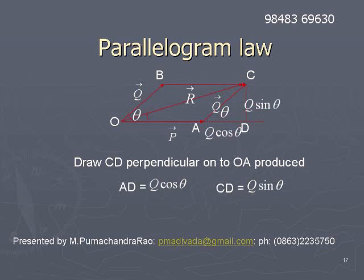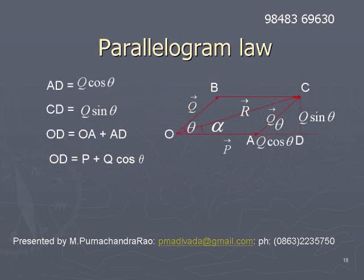The magnitude of q-bar is q. So the component AD will be q·cos(theta) and the component CD will be q·sin(theta). In the parallelogram OACB, let us consider the right triangle OCD. The components of AC (which is q-bar) are: AD = q·cos(theta) and CD = q·sin(theta).